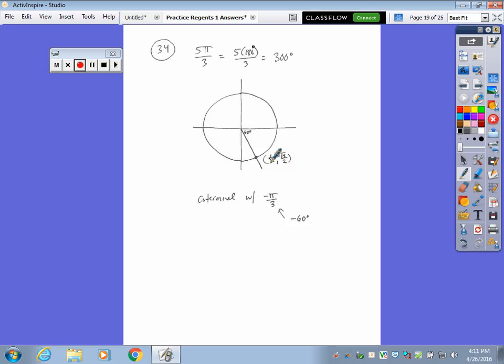And a coterminal angle with that would be going clockwise. Remember, clockwise is negative. Counterclockwise is positive. So we're going back 60 degrees, which would be negative pi over 3.